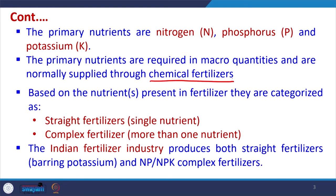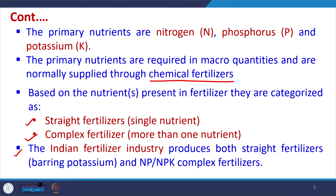Based upon the nutrients, fertilizers can be classified into straight fertilizers and complex fertilizers. Straight fertilizers contain only one single nutrient, whereas complex fertilizers contain more than one nutrient. In the Indian fertilizer industry, we manufacture both straight fertilizers bearing potassium and complex fertilizers like nitrogen-phosphorus or nitrogen-phosphorus-potassium all mixed together.